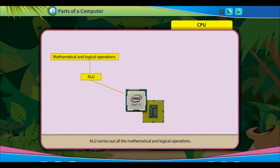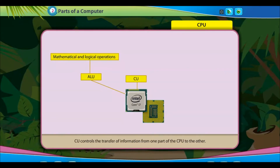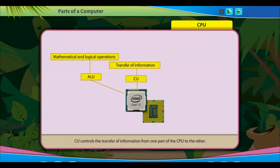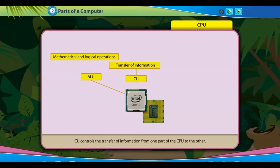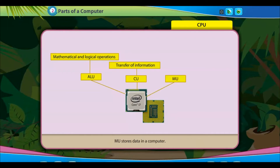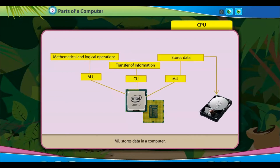The ALU carries out all the mathematical and logical operations. The CU controls the transfer of information from one part of the CPU to the other. The MU stores data in a computer.